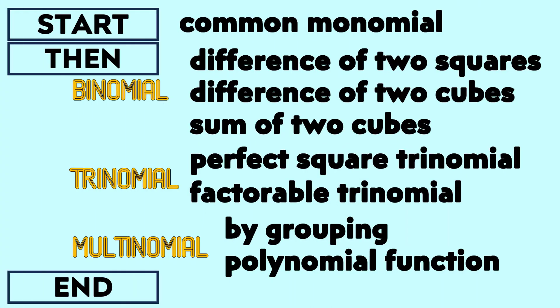Here's the guide for factoring polynomials. We need to start with common monomial factoring, then whatever the result, we're going to categorize them as binomial, trinomial, or multinomial, and we have specific processes under specific results. Then we end it.